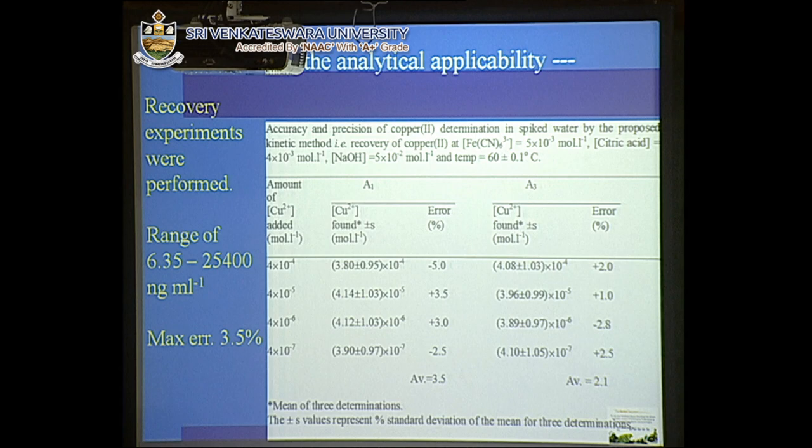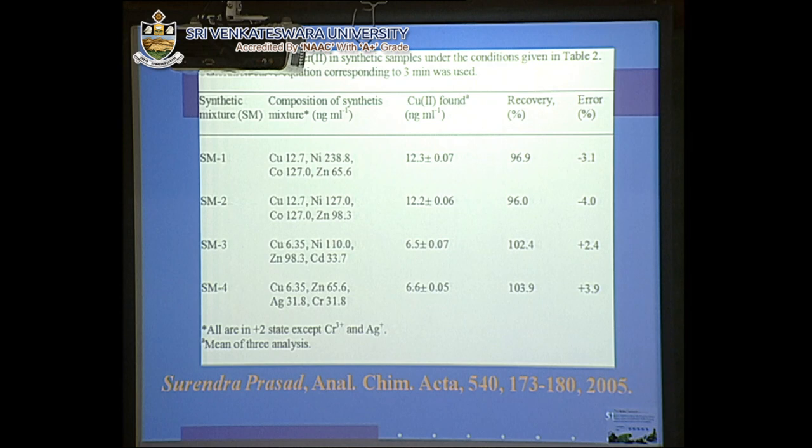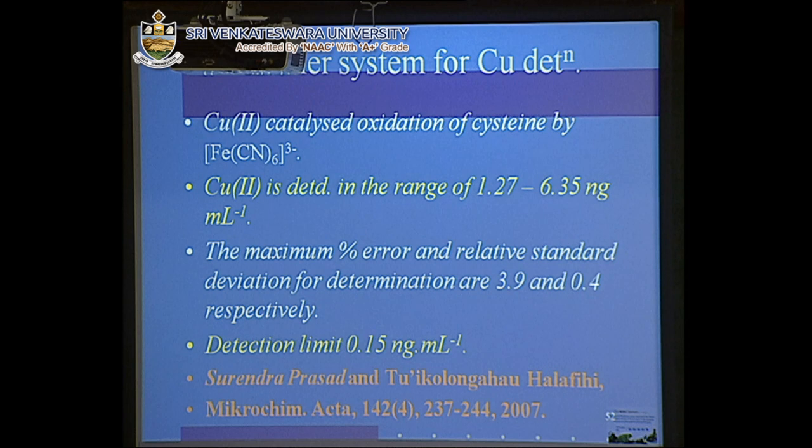In this case, quite a long range of concentration — three orders of magnitude from 10⁻⁴ to 10⁻³ — was determined. This was published in 2005 in Analytica Chimica Acta, one of the top-class journals. Another method for copper determination was published in Microchimica Acta.